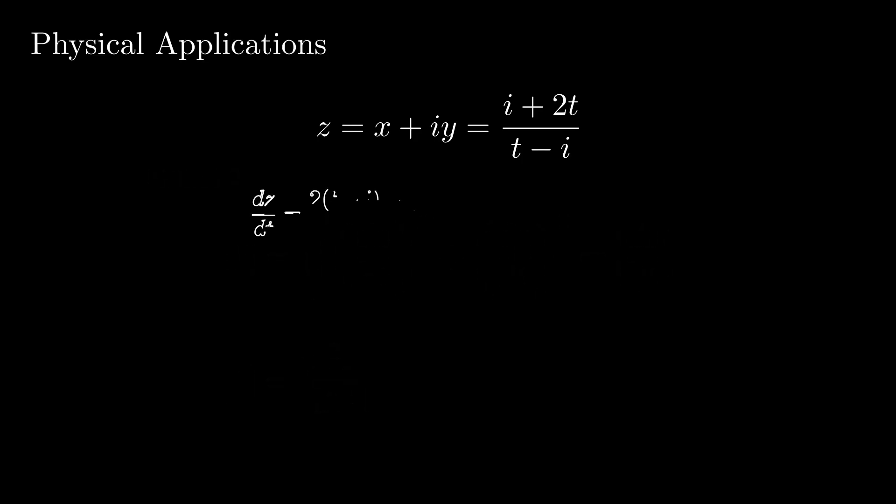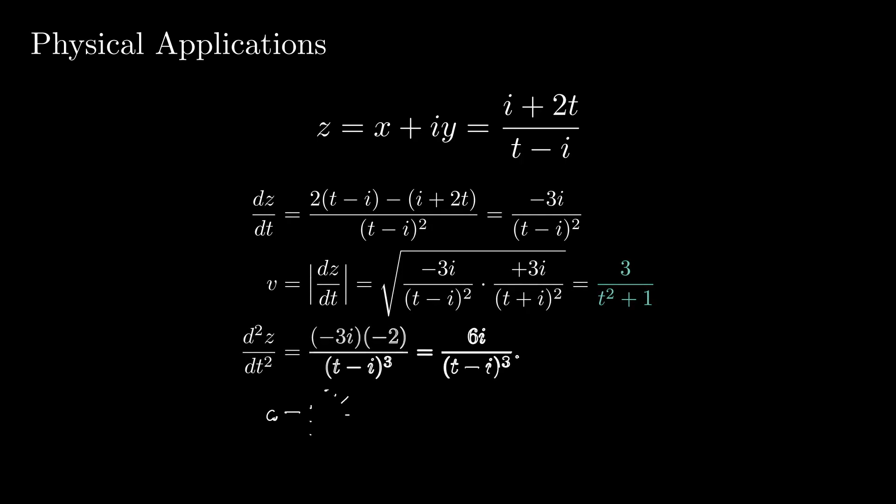Performing these computations yields the following, where we directly take the derivative of z, instead of first finding the real and imaginary parts. Finding the velocity then just becomes a matter of taking the square root of dz dt times its conjugate,